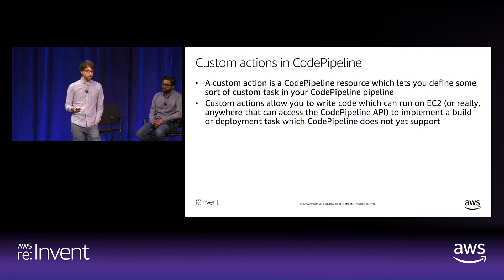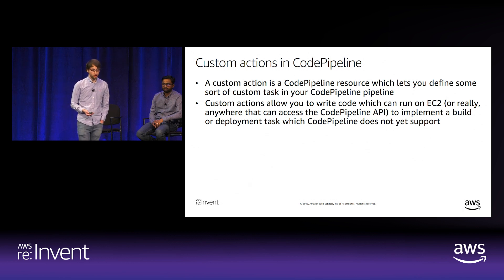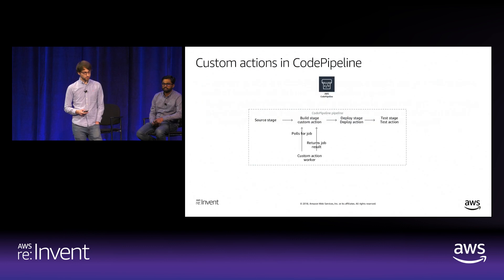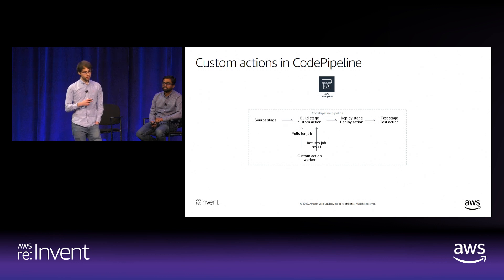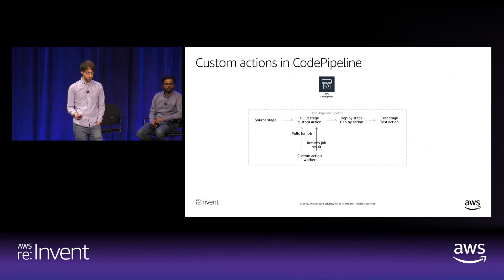A custom action is a CodePipeline resource that lets you define a custom task for your pipeline, allowing you to write code that can run on EC2 or anywhere with CodePipeline API access. The worker polls the PollForJobs CodePipeline API at regular intervals asking which custom action it's implementing. Most of the time the response is an empty array. When a pipeline is running your custom action, a job appears. Your program calls AcknowledgeJob to claim it, downloads input artifacts from S3, does the work, uploads output artifacts to S3, and calls PutJobSuccessResult.